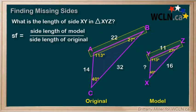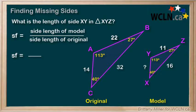We know the length of side AB and side YZ, and those two sides are corresponding, so we can use them to find the scale factor. Triangle XYZ has been scaled by a factor of one-half.